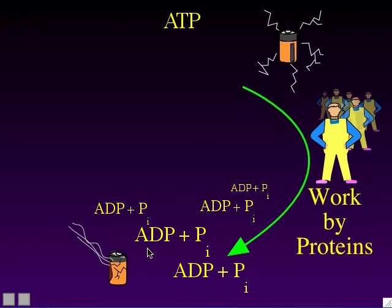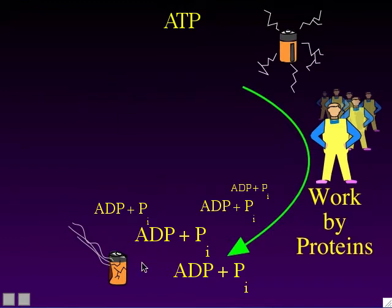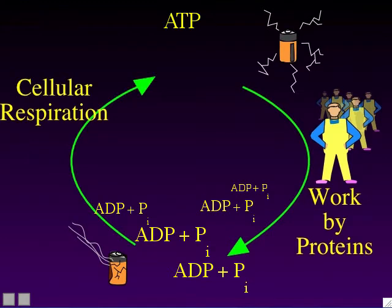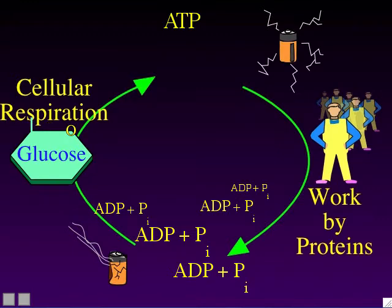All those proteins inside your cells are constantly using ATPs for energy, so ATPs are constantly disappearing from the cytoplasm and being replaced by ADP and Pi. The cell must have some way of recharging its ATP supply — reattaching that phosphate back onto the ADP to give itself an ATP molecule again. Otherwise the cell would run out of ATPs, proteins couldn't do their jobs, and the cell would die.